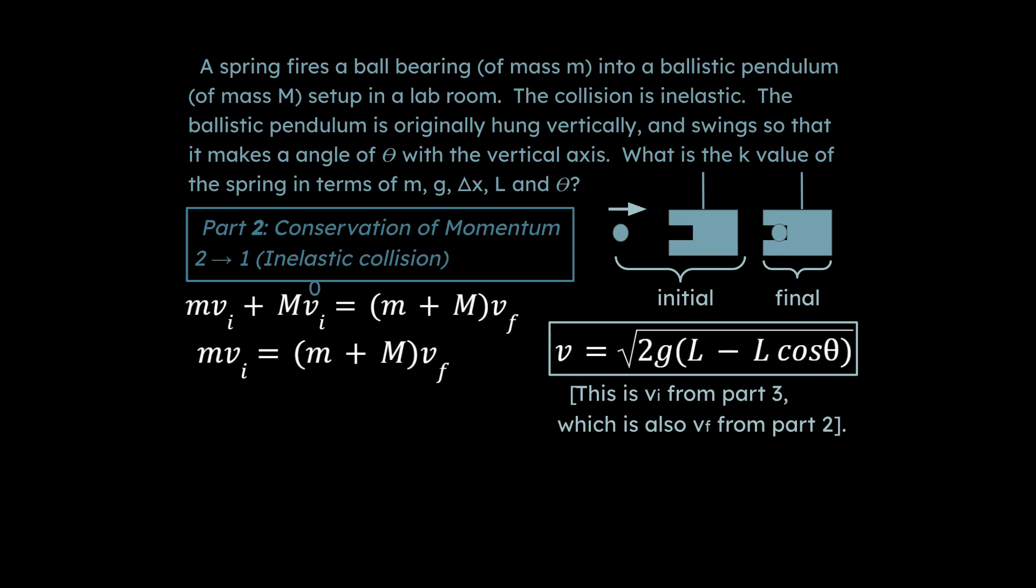And so we go ahead and at this point we're solving for our unknown, isolating. We're ready to plug in what our value is for v from part three that we solved for, because that v final for part two is the same as v initial for part three.